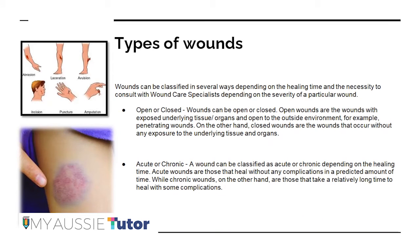Closed wounds are those which occur without any exposure of the underlying tissue and organs to the outside — the damage happens internally. As shown in the image, a closed wound is one where damage has occurred internally and may be visible externally, but there is no exposure of the underlying tissue to the outer environment.